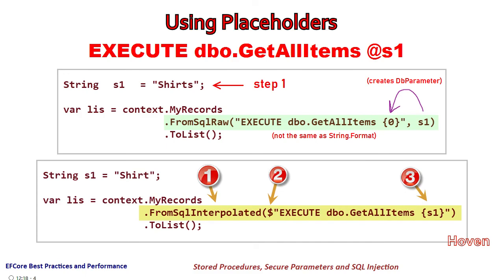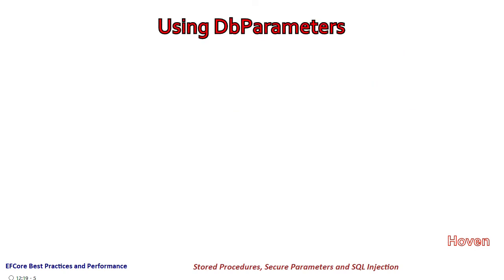There is an alternate way of doing the same thing using string interpolation syntax. The above code could also be written with a dollar sign to replace the numeric placeholders with the name of the parameter. In this code we use: $"EXECUTE dbo.GetAllItems {s1}". In this case also, the value s1 is converted to a DbParameter and executed.